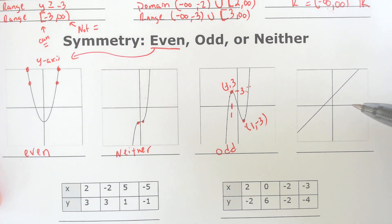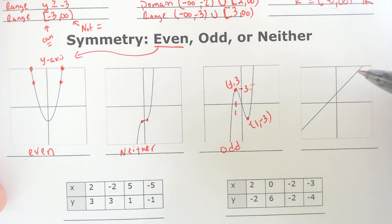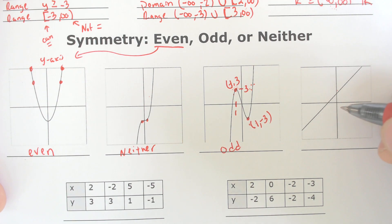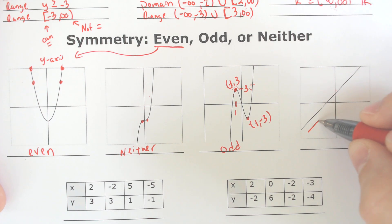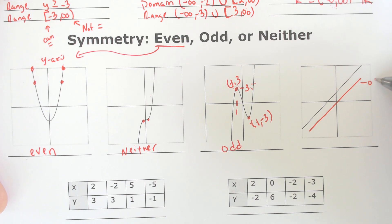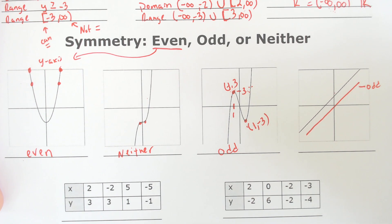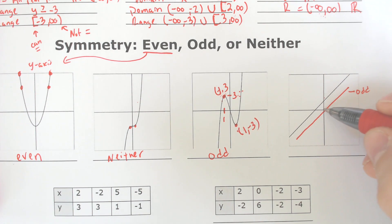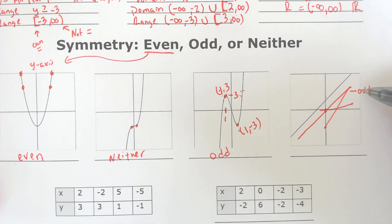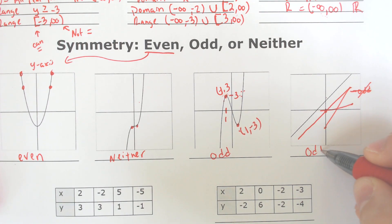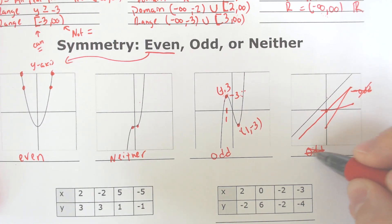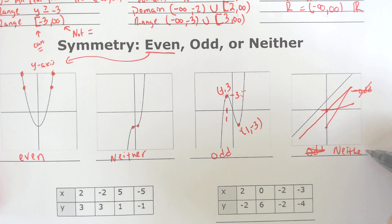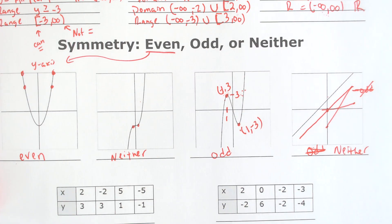Same thing here — even a line can be considered an odd function if it flips and flops like it should. This would be an odd function only if it went through the x-axis and through the origin. It does not, so this problem is neither even nor odd.